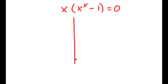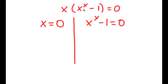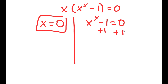This gives me two equations: x is equal to 0, and x to the power of x minus 1 is equal to 0. So x equals 0 is already a solution. For x to the power of x minus 1 equals 0, I'm going to add 1 on both sides. These cancel out and I get x to the power of x is equal to 1.